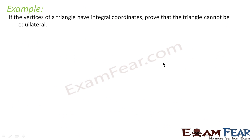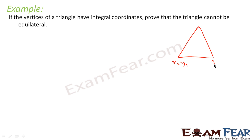Let us take the last question. If the vertices of a triangle have integral coordinates, prove that the triangle cannot be equilateral. To do this, let us take an equilateral triangle with vertices (x1, y1), (x2, y2), and (x3, y3), and let these be integral coordinates.